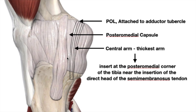We can see the posteromedial corner of the knee and the medial collateral ligament. Just posterior to the MCL, this area is the posteromedial joint capsule, and the area drawn with lines is the posterior oblique ligament. The posterior oblique ligament has its origin from the adductor tubercle and inserts over the tibia with three arms. The area between the MCL and the posterior oblique ligament is called the posteromedial joint capsule — these two structures are inseparable.